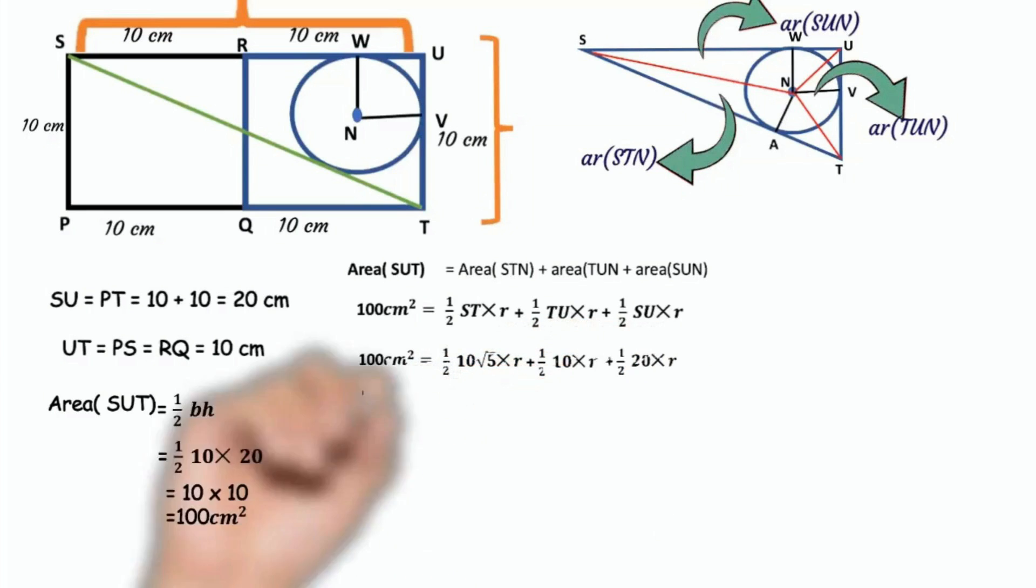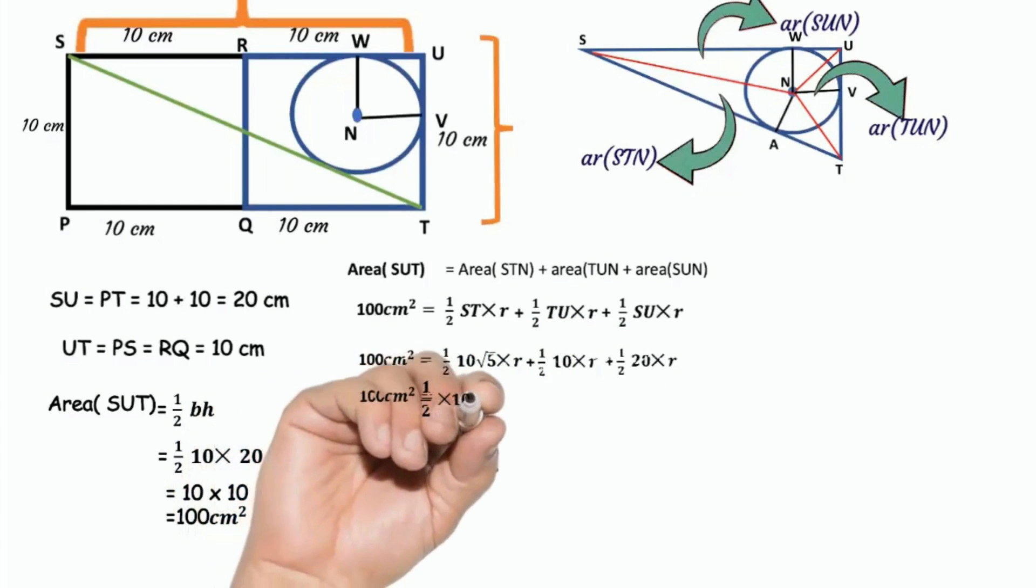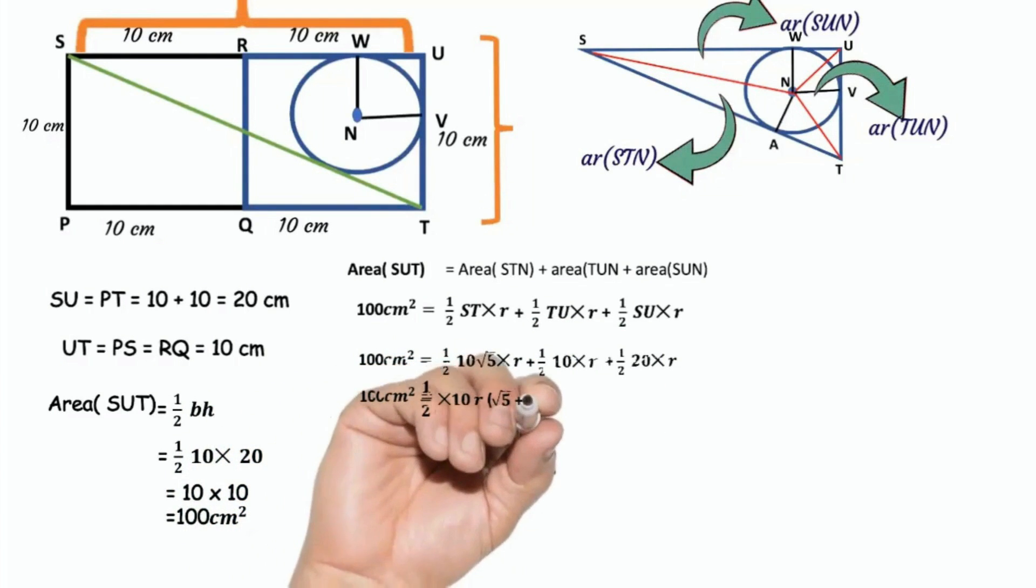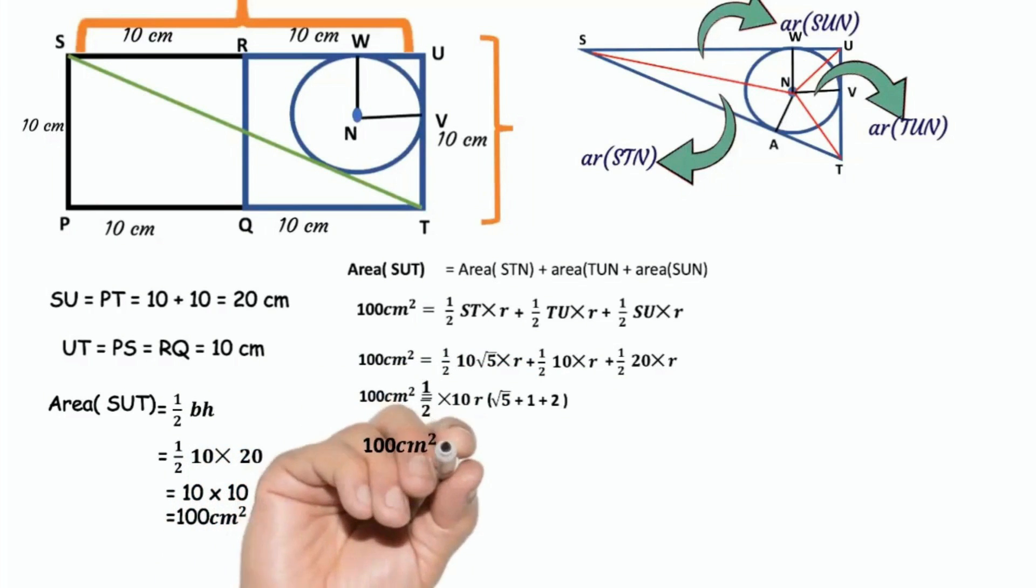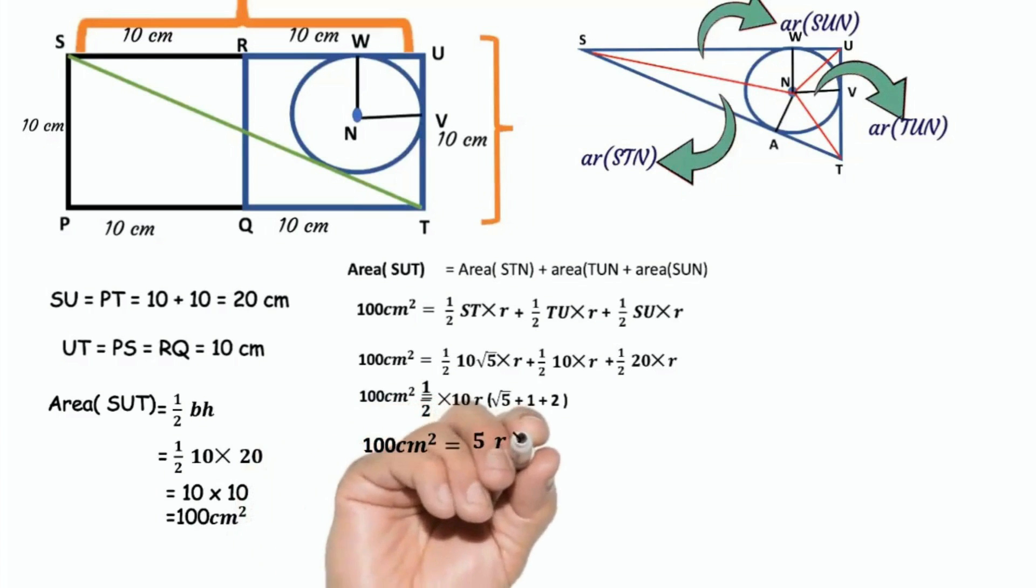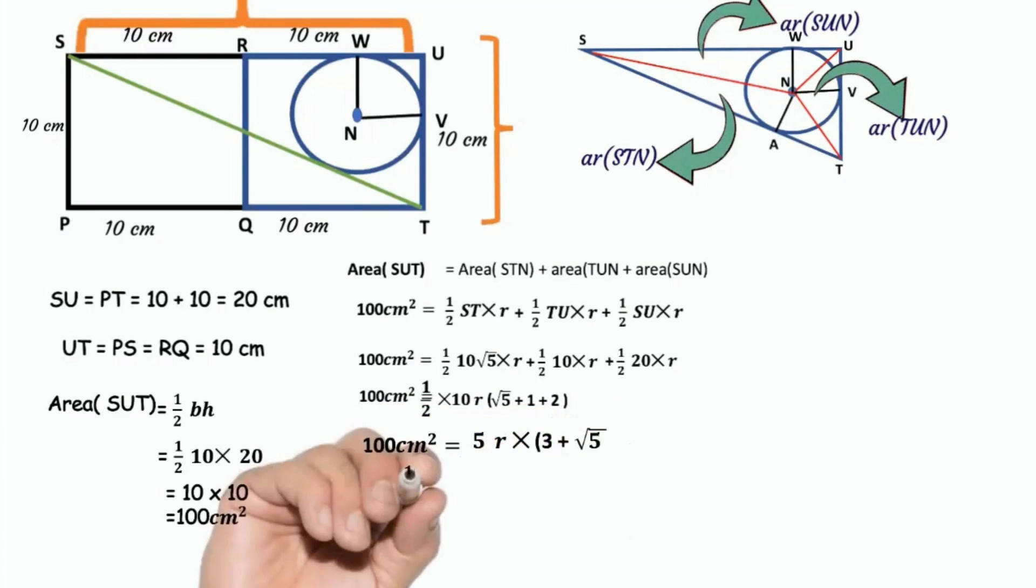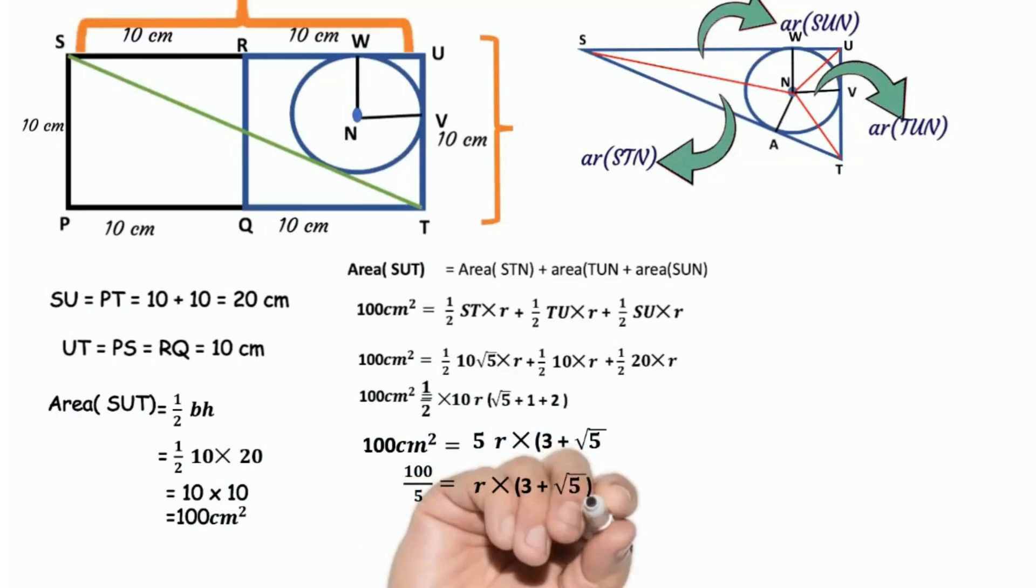Take half into 10 R as common. Half into 10 R into root 5 plus 1 plus 2. 10 and 2 cancelled we get 5. So we get 100 cm square equals 5R into 3 plus root 5. 100 divided by 5 equals R into 3 plus root 5. 20 equals R into 3 plus root 5.